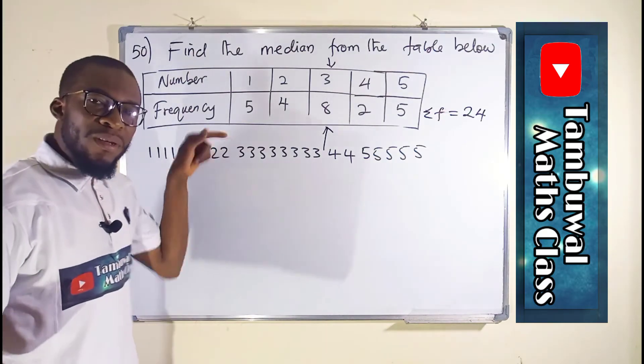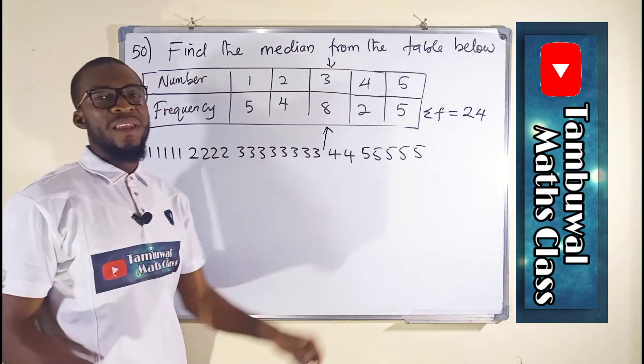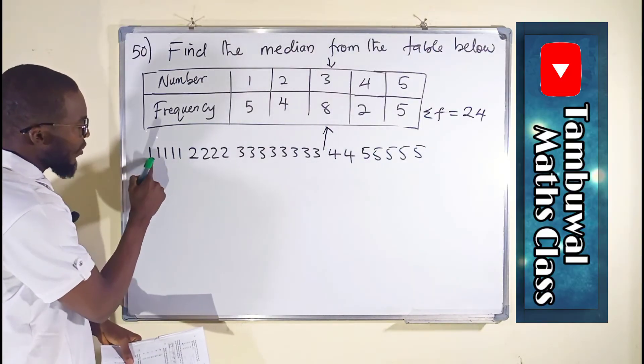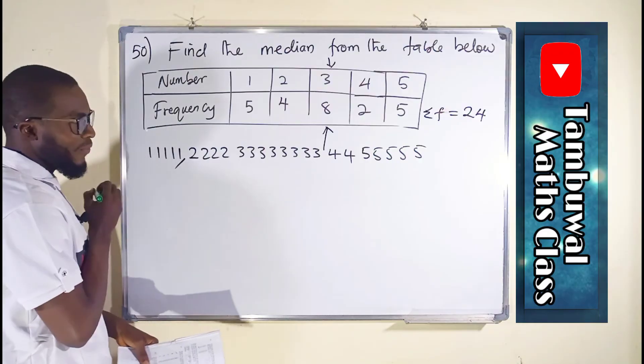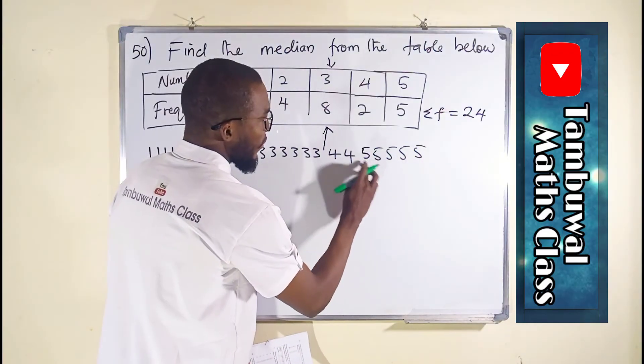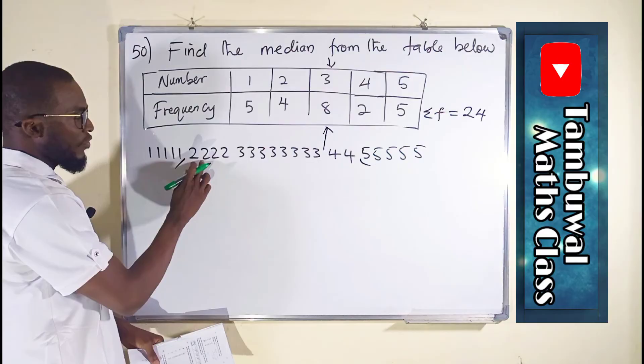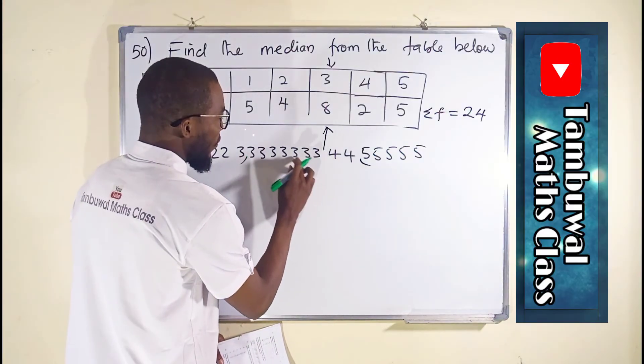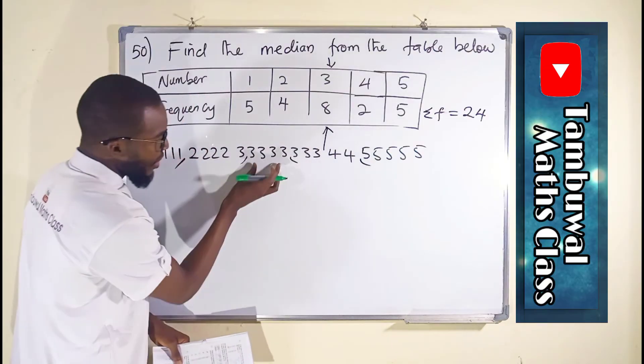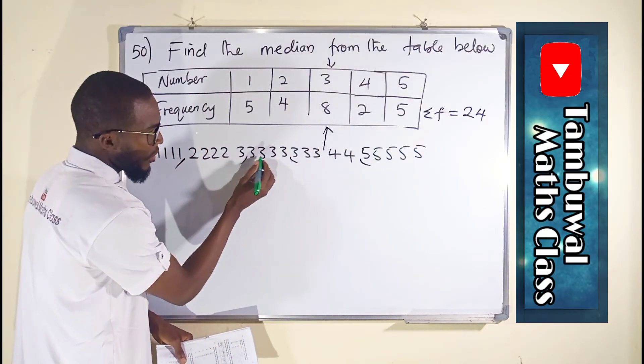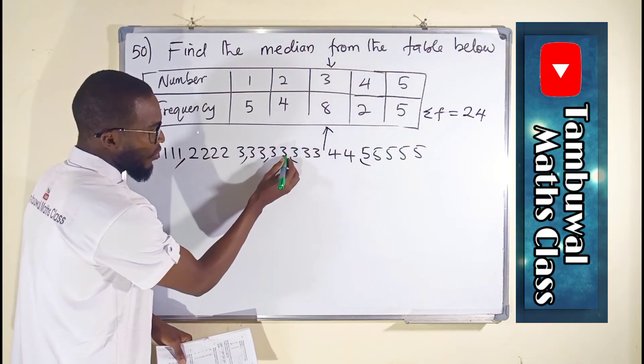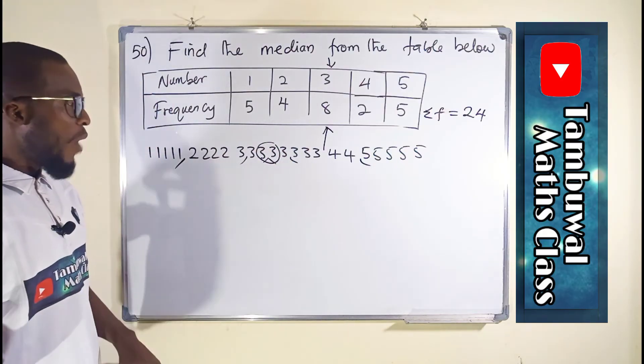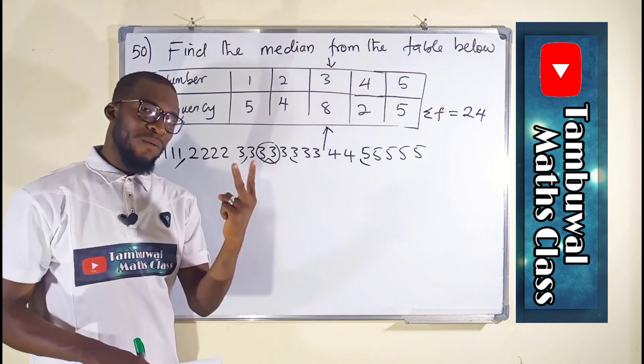Now we want to find the middle number. That middle number is our median. So let us count. Let me remove 5 here, let me remove 5 here, let me remove 5 again from each side. We have 4 numbers remaining, so these 2 numbers are the middle numbers.